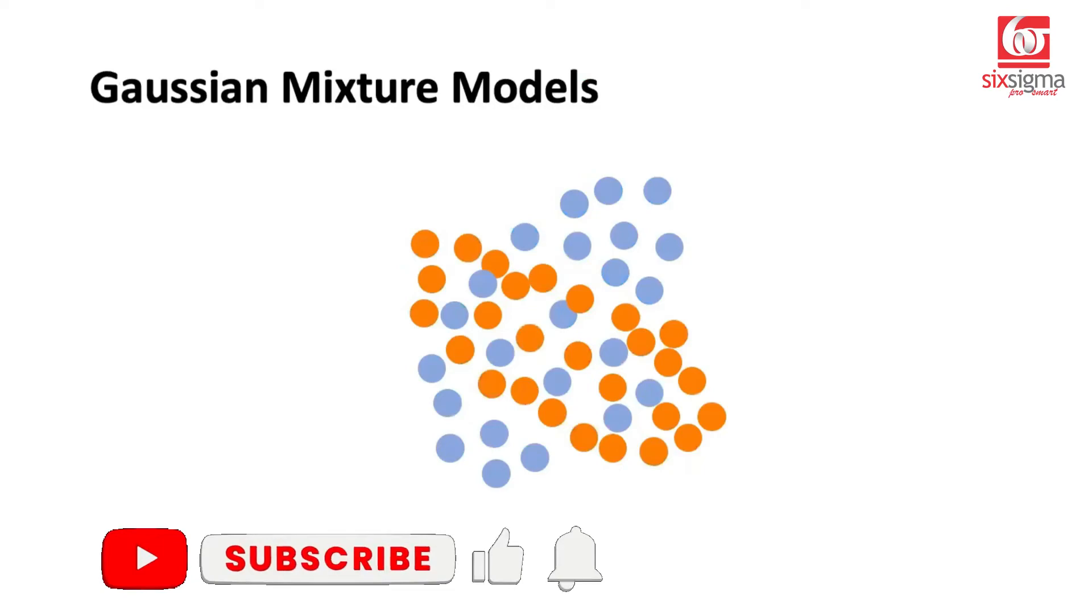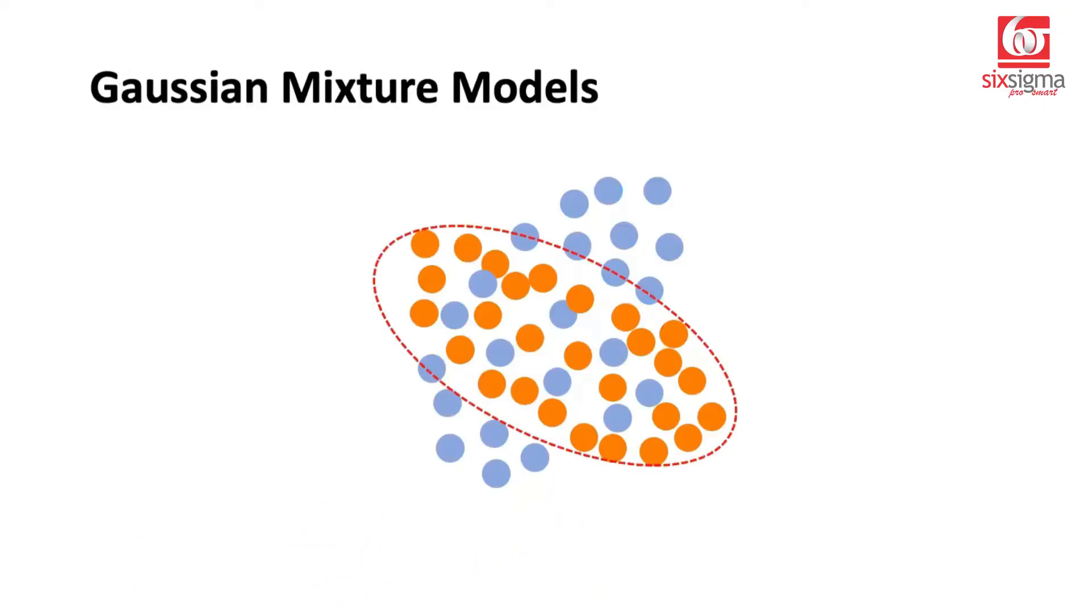But what if our data was something like this? It's all mixed up. If you look at it carefully, there's a potential of looking at a cluster like this for these orange points and another cluster for these blue points. But why a conventional technique like k-means would not work here is because the center of these two clusters is overlapping. We know that k-means is a center-based technique, deciding cluster membership based on proximity to the centers. What if the centers are overlapping? In such cases, the Gaussian mixture models come to our rescue.